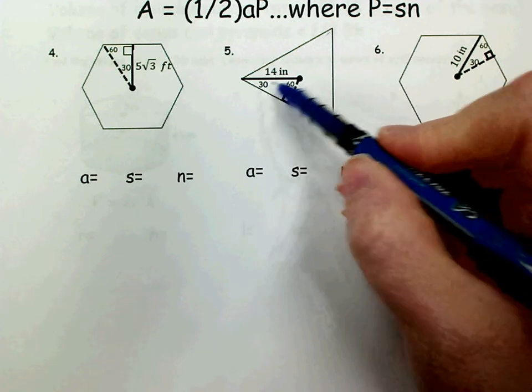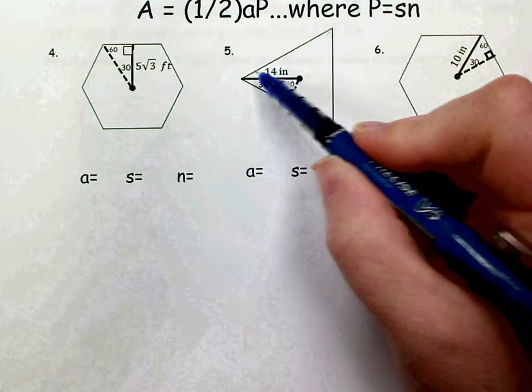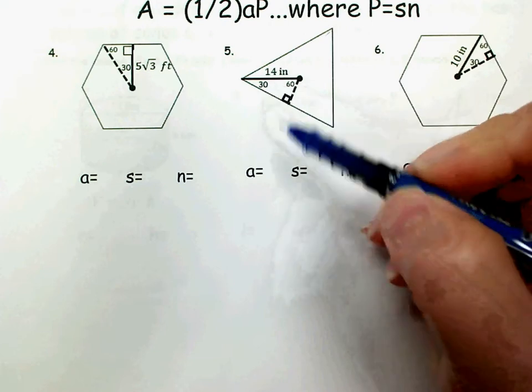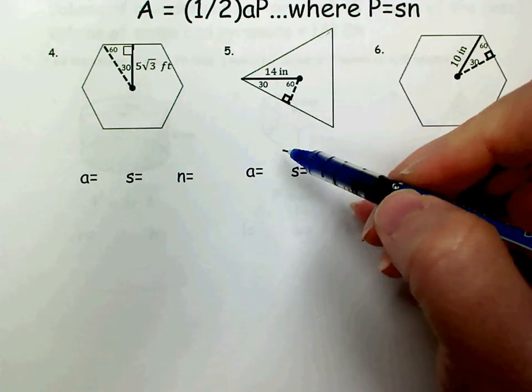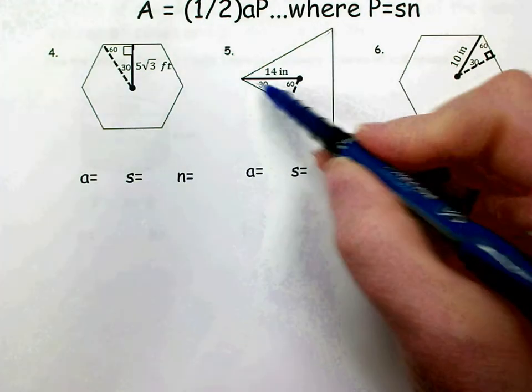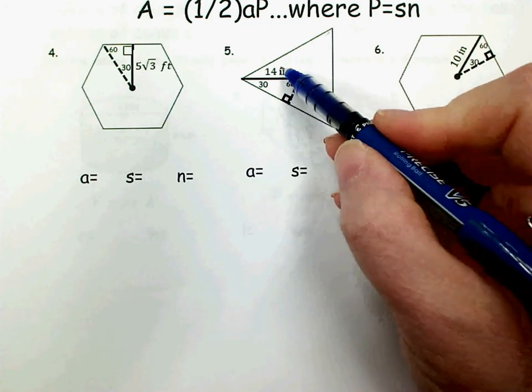Labeling my 30-60-90 again correctly, remember that radius is bisecting a 60 degree angle. So there's my 30 at the vertex and 60 at the center. So the radius is across from my right angle. So it's the hypotenuse.